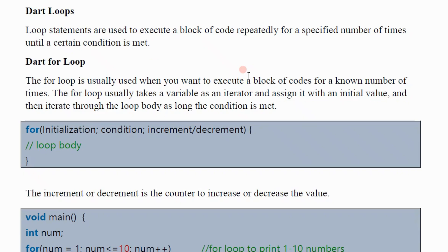Welcome back. This time we are going to look at looping or iteration statements. Loop statements are used to execute a block of code repeatedly for a specified number of times until a certain condition is met. We have three main types of loops: the for loop, while loop, and do-while loop.